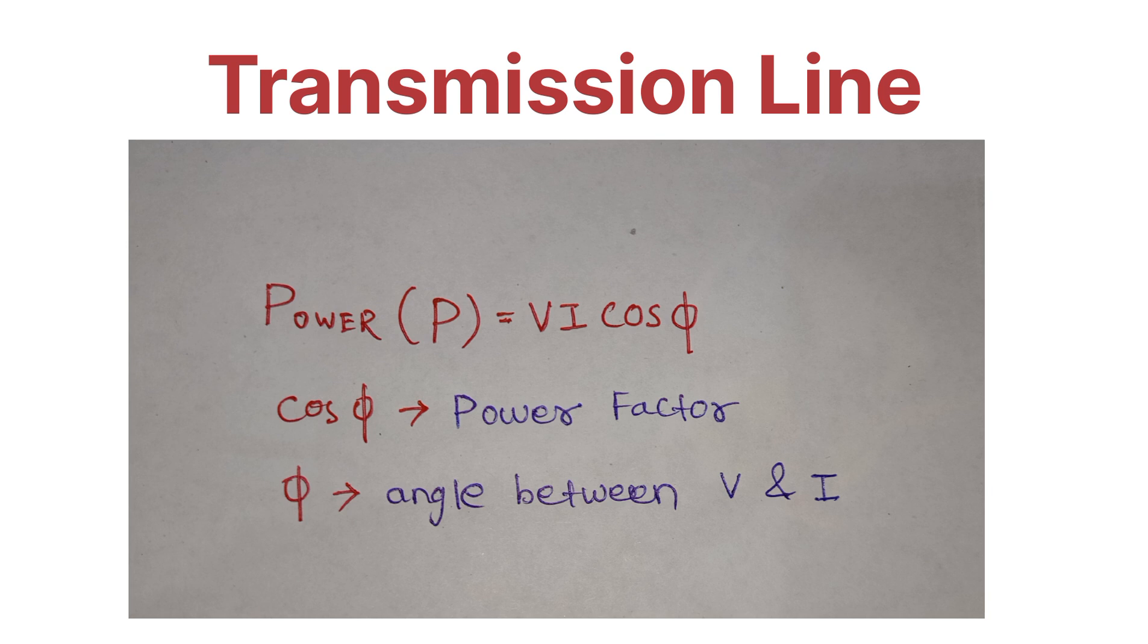Here, cos φ is the power factor. φ is the angle between the voltage and current.